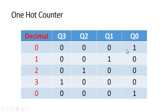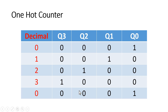Let us say its reset value is 0001. This one-hot encoded value is equivalent to decimal 0. In the next clock cycle, this one will be shifted to Q1 and all other bits will be 0 — this is equivalent to decimal 1. Similarly, when the one is shifted to position Q2, that is equivalent to decimal 2, and so on. Finally, after 3 it will repeat, and the value will become 0001 again.